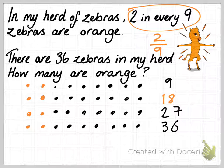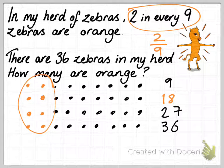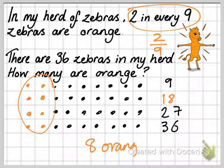And how many of them are orange? Well, there's 1, 2, 3, 4, 5, 6, 7, 8 of them. So the answer is 8 orange zebras.